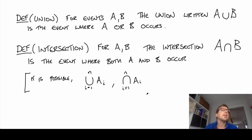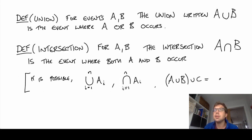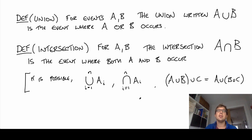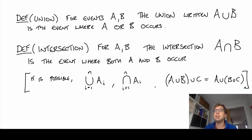One thing implicitly assumed here is that, for example, A union B union C equals (A union B) union C — and similarly for intersections. In other words, it doesn't matter the order in which we perform unions or intersections. They have this nice associativity property, so we can do them in any order.